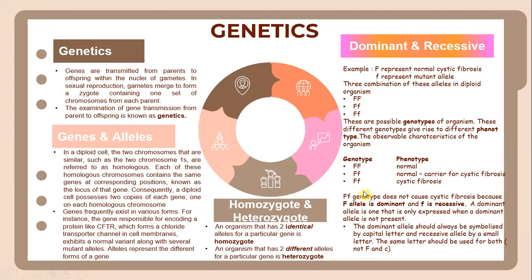Let's look into genetics. Genes are transmitted from parents to offspring in sexual reproduction. Gametes merge to form a zygote containing one set of chromosomes from each parent. The transmission of genes from parents to offspring is known as genotype. In diploid cells, the two similar chromosomes are referred to as homologous, and each homologous chromosome contains the same gene at corresponding positions known as the locus of that gene. Consequently, a diploid cell possesses two copies of each gene, one on each homologous chromosome.